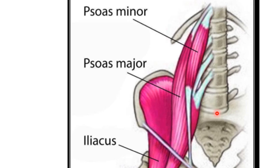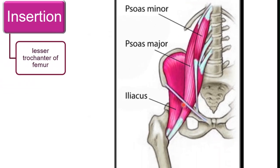Moving to its insertion, we see the muscle running distally to the proximal part of the femur, where it is finally inserted at the lesser trochanter of the femur. So from origin at T12 to L5, the insertion is the lesser trochanter of the femur.